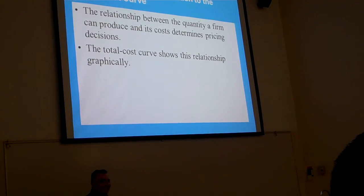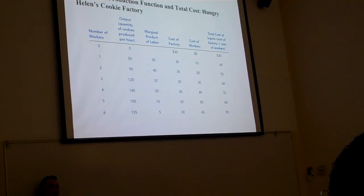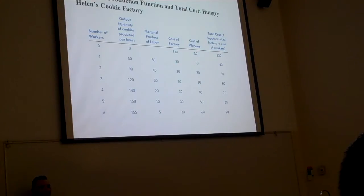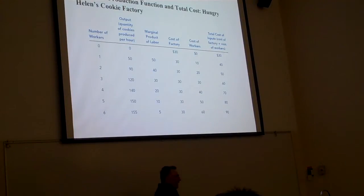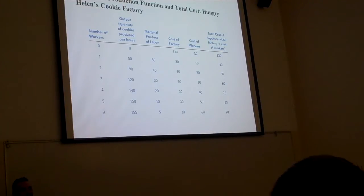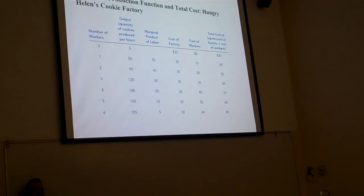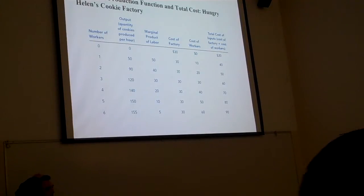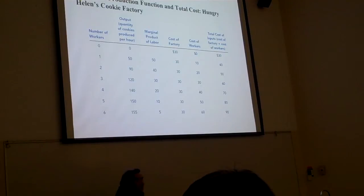We hire one worker: total product is 50, marginal product is 50. The factory fixed cost is unchanged at $30. Labor cost for one person is $10 a day, so total cost is $40. We hire a second worker: that second worker contributes an additional 40 units of output for a total of 90. Fixed cost doesn't change; cost of two workers is $20; total cost is $50.